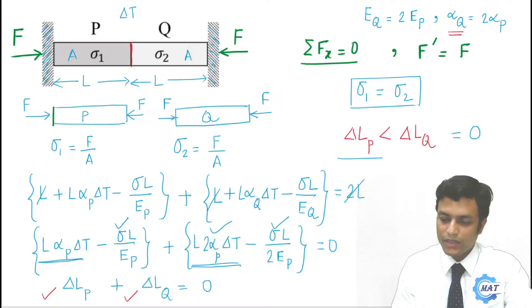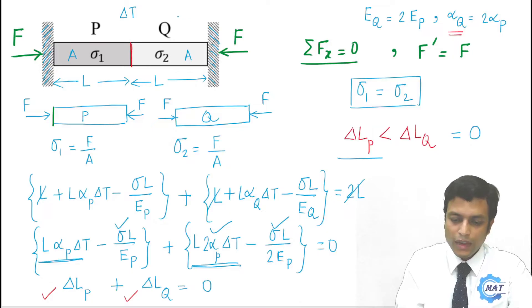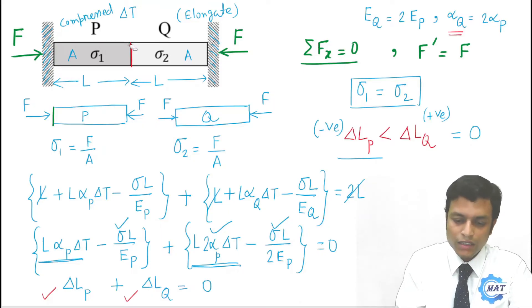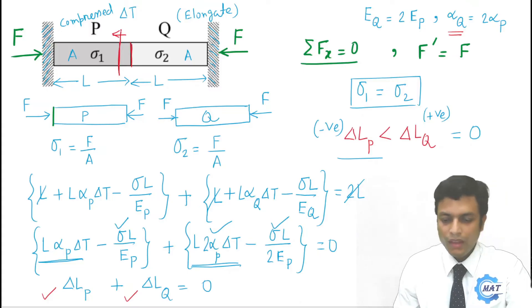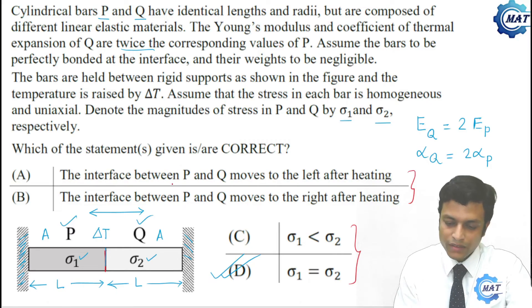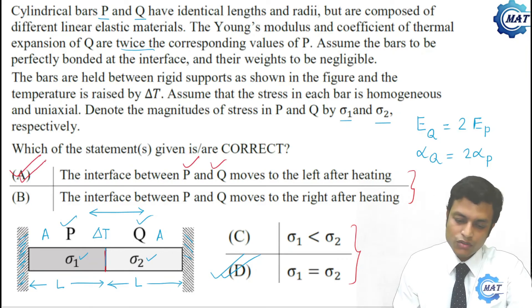So here we can say delta LP is less than delta LQ, and their summation is 0. That is, Q will elongate, delta LQ is positive and delta LP is negative. P will compress. That means the junction will move to the left. So junction will come somewhere here. The interface or junction between P and Q moves to the left. So this is another correct answer. Options A and D are correct here. Thank you.